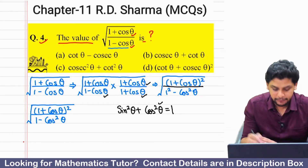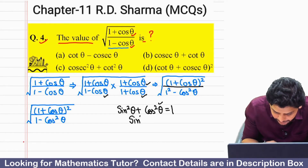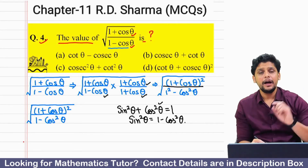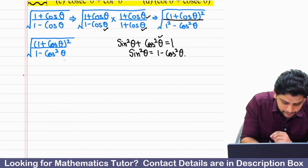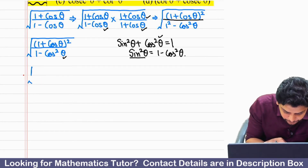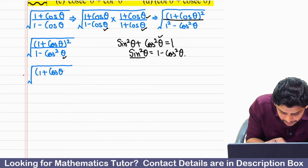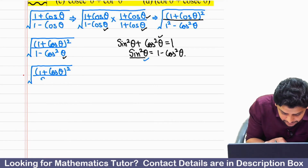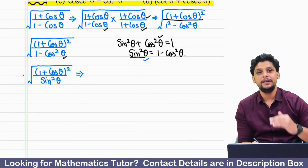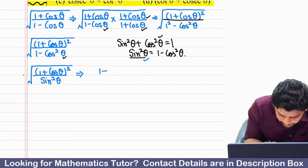अगर इस cos theta को right-hand side में shift कर दूं, so this will be sin squared theta equal to 1 minus cos squared theta. So in the denominator, we replace (1 minus cos squared theta) with sin squared theta. Now both the numerator and denominator are perfect square terms. So we remove the square root, giving us (1 plus cos theta) divided by sin theta.